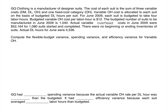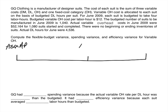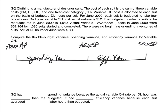The first thing we want to do is draw our chart and label everything. The first peg is actual quantity times actual price. The second peg is actual quantity times standard price. The third peg is standard quantity times standard price. Our first variance to calculate for variable overhead is the spending variance, the second is the efficiency variance, and then we'll calculate the flexible budget variance.